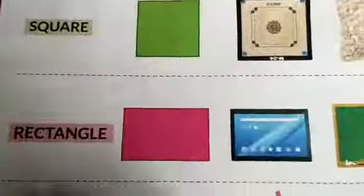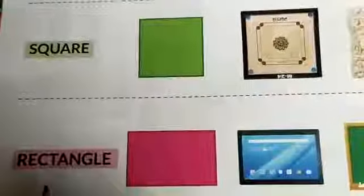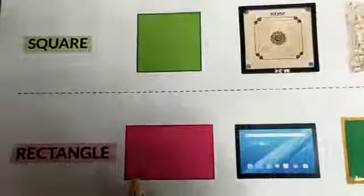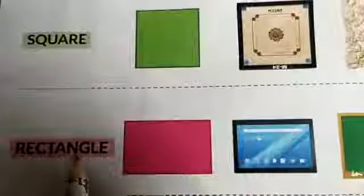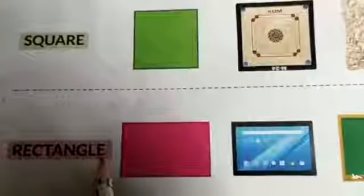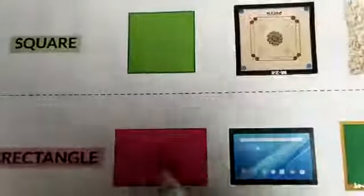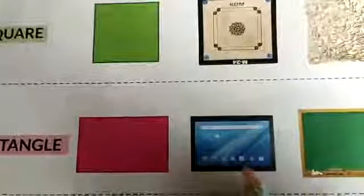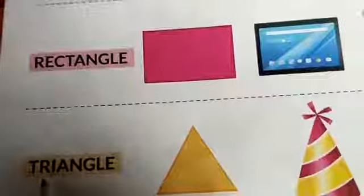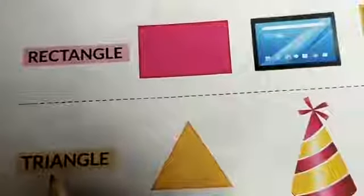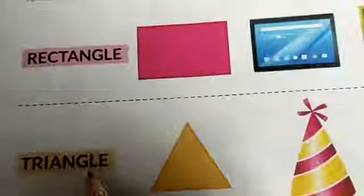Next, rectangle. R-E-C-T-A-N-G-L-E rectangle. For example, tab, blackboard.